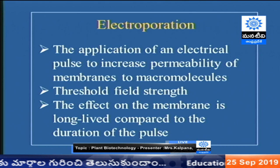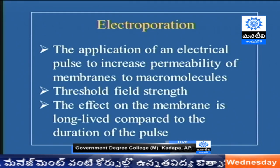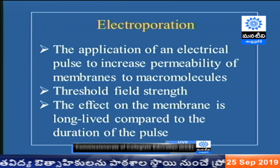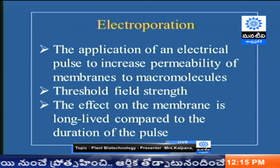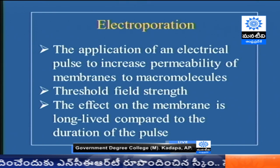The next method is electroporation. Here we induce some pores in the cell membrane of the protoplast using electricity. By applying electricity, we are changing the permeability of the protoplast — this is known as electroporation. Usually, the cell membrane is permeable only to small molecules and small ions, not to highly charged macromolecules, especially DNA.